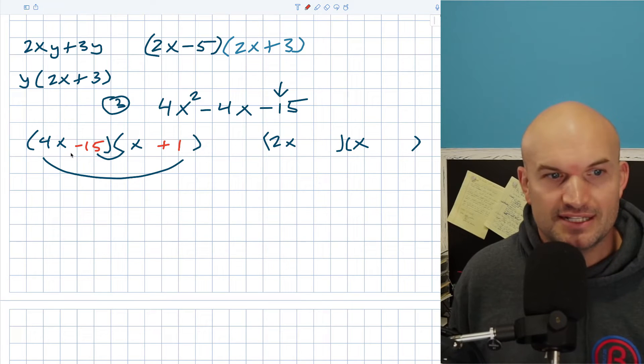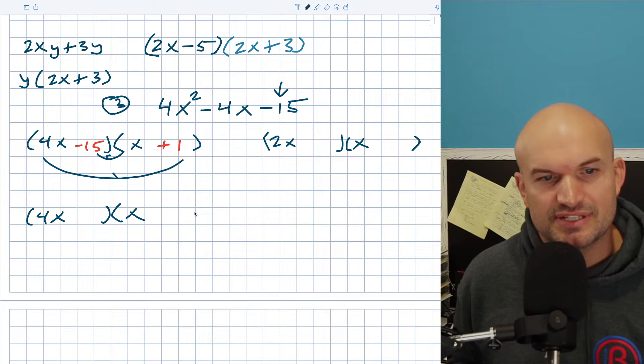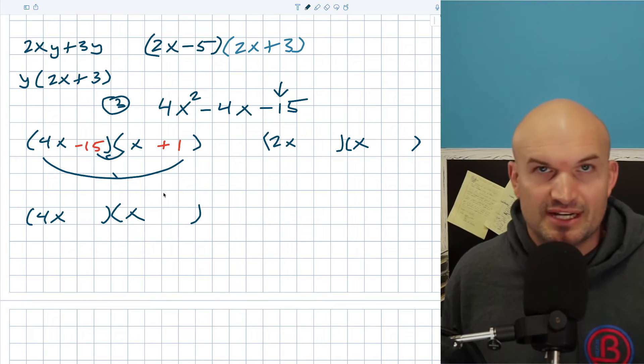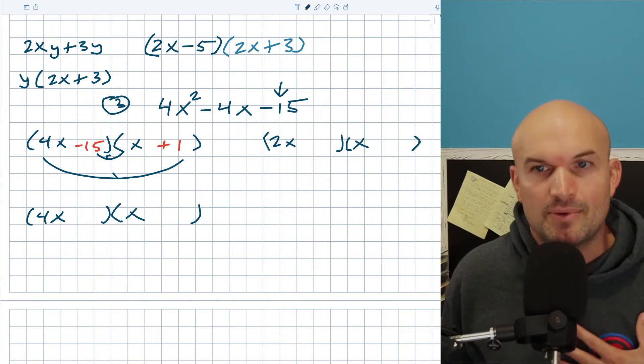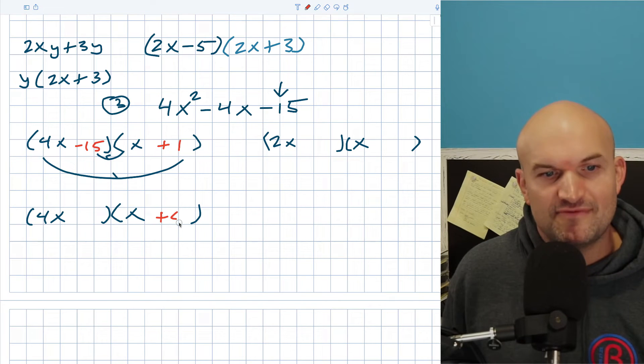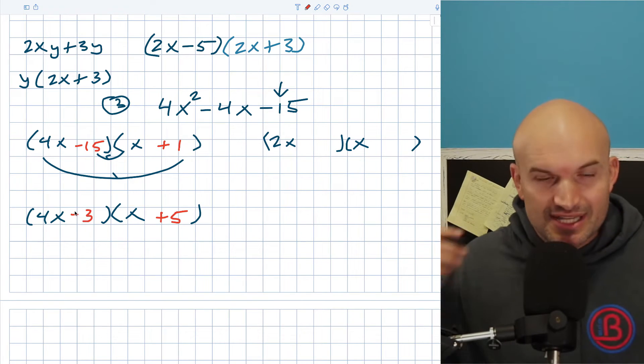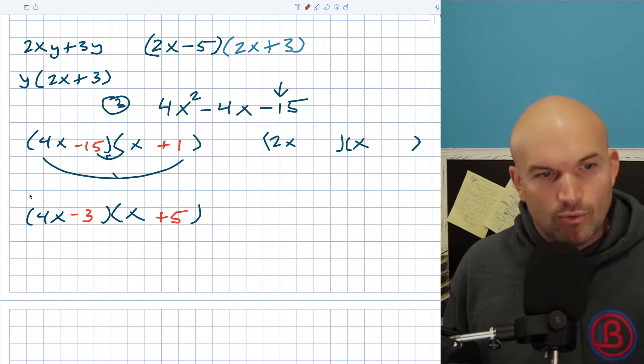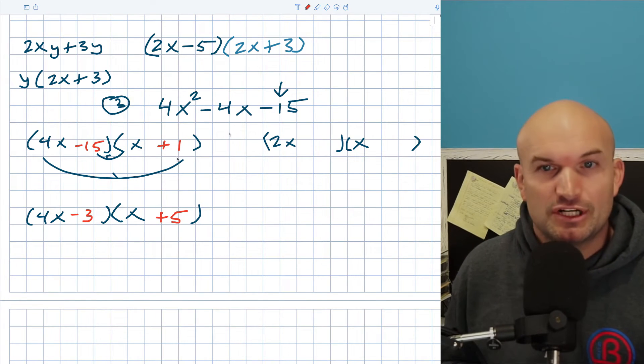Let's try the 15 and threes. What about 15 and three? If I did like a five and a negative three, I'm just guessing and checking in my head. Well, four times five is 20, right? And three times X is three. 20 and three is going to have a difference of 17, not even close.